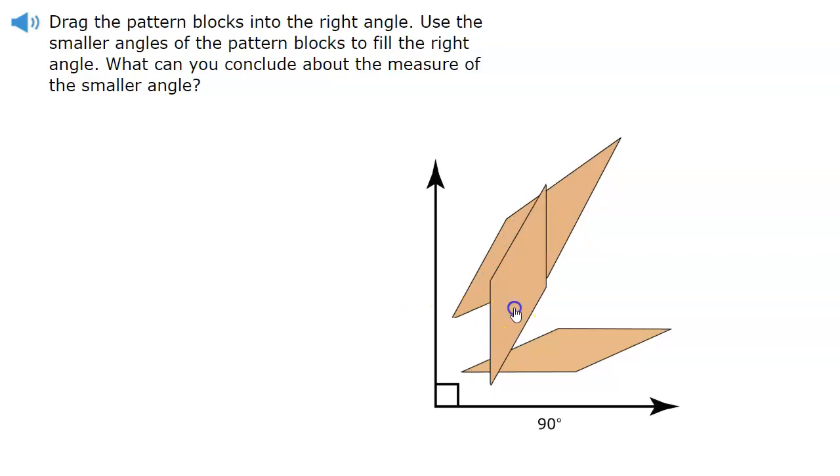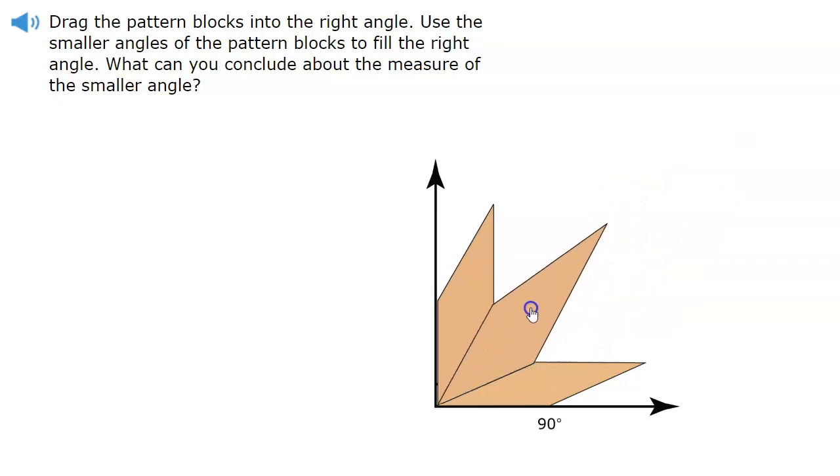We're going to try to see how we can use these pattern blocks to fit it in the right angle. I'm going to move this trapezoid pattern block right against the right ray. Next, I'm going to move the last trapezoid to be at the end point where the two rays are connected. As you can see these three same acute angles put together equals 90 degrees.